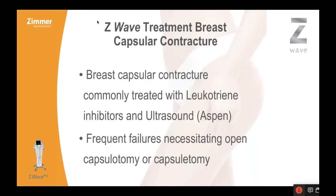Capsular contracture is one of the more frustrating things that we as plastic surgeons deal with because it doesn't make sense that it would be unilateral when the same implant, same histology, same everything is going on. Things that have been tried in the past include leukotriene inhibitors — Accolate, Singulair. There's some anecdotal evidence they work, but I don't find them that effective. We've used ultrasound in the past. Most of these things seem to fail and necessitate an open capsulotomy, capsulectomy, and usually replacement of the implant.